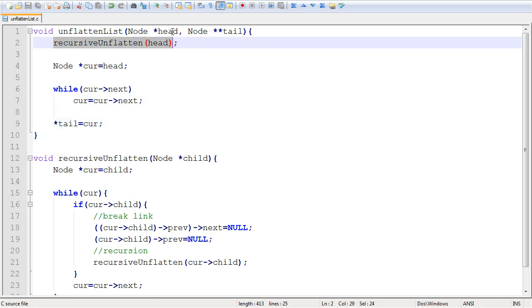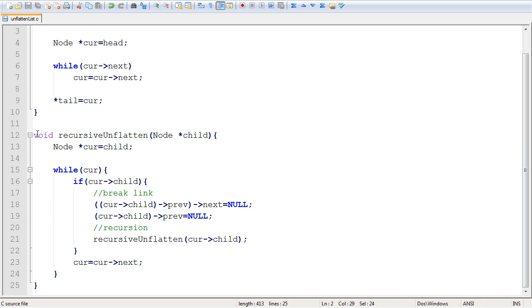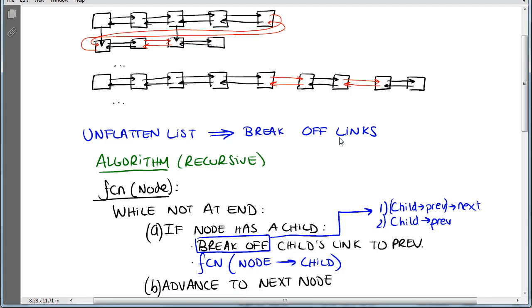This is the call to the recursive function, passing it the head - this is where all the action happens. This implements the algorithm I showed you. We have our while loop checking if the current element has a child. If it does, we break the link by setting two pointers to null: the previous element's next pointer, and the child's previous pointer. Look at the diagram for that. Then we call the recursive function on the child and its list, and continue with the while loop. This is the implementation of that algorithm.